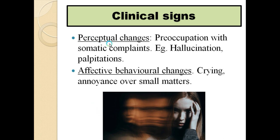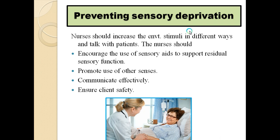Perceptual changes include preoccupation with somatic complaints — for example, a patient with leg pain constantly worrying whether it is cancer. This may lead to hallucinations and palpitations. Affective behavioral changes include crying over small matters and being easily annoyed.